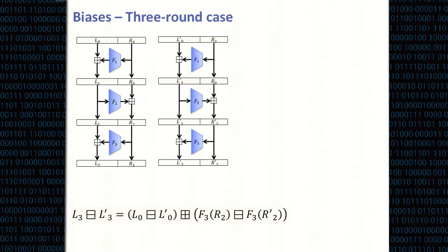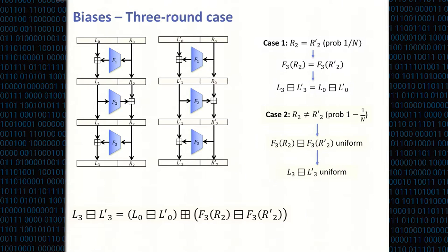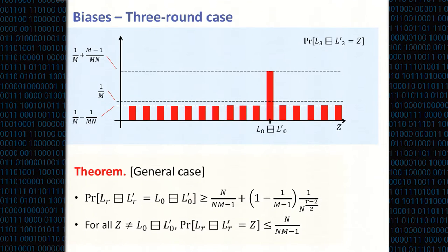This allows us to distinguish two cases: when the two inputs to the final round function are equal, which happens with probability 1/N, the second term cancels and the output difference equals the input difference L0 − L0′. Otherwise, with probability 1 − 1/N, the final round functions are evaluated on different inputs so the difference is uniform. Combining these cases, the final distribution has a peak at L0 − L0′, making that value more likely. We generalize this to arbitrary rounds, showing that as rounds increase there is always a small but nonzero bias, which vanishes with increasing round number but remains substantial when rounds are not too high.